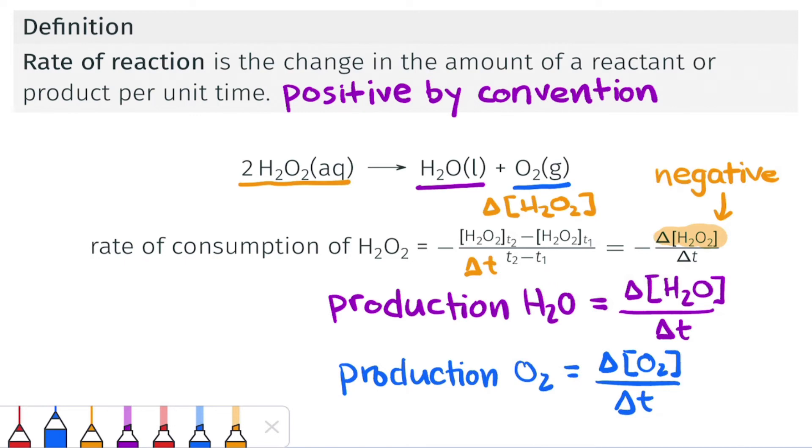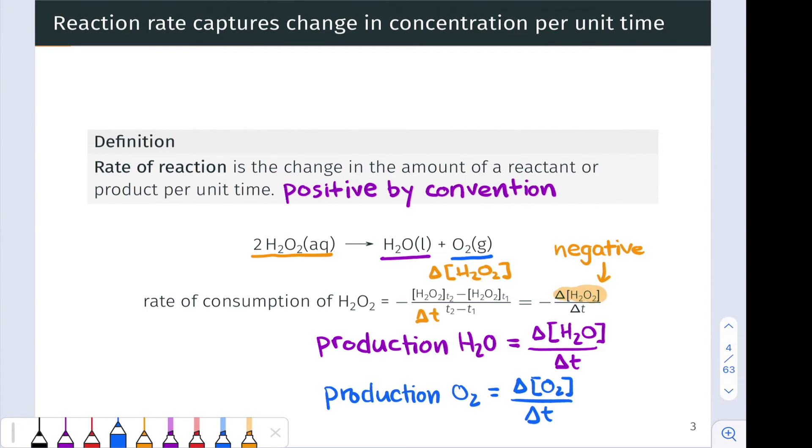These are all reaction rates and they're not necessarily numerically equal to each other for stoichiometric reasons that we'll dig into here in a second. But each of these we could think of as a measure of the rate of reaction. It's a change in the amount or concentration of a reactant or product per unit time.